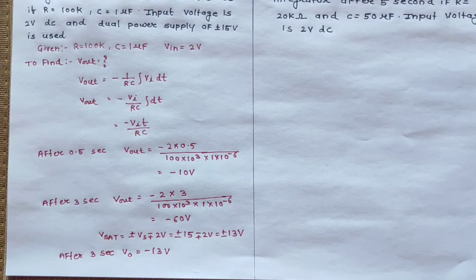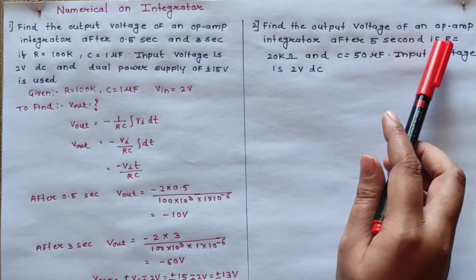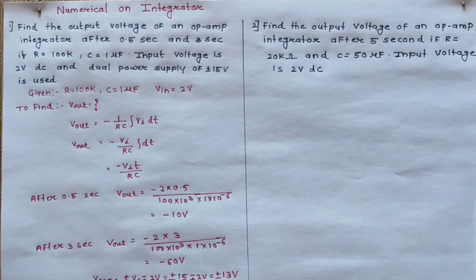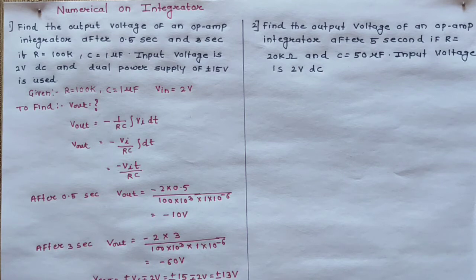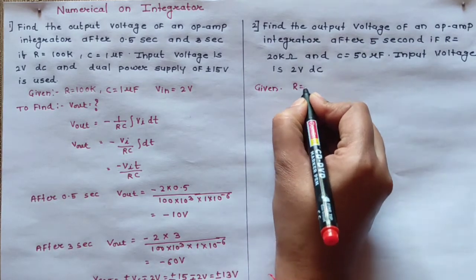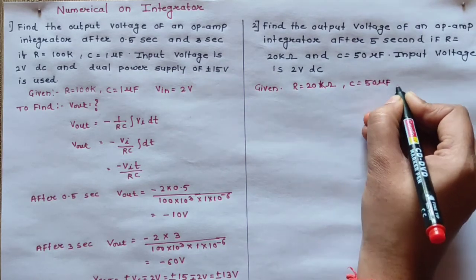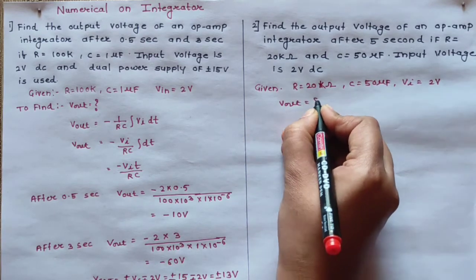That was a simple example. Let's come to the next example — numerical number 2. Find out the output voltage of an operational amplifier integrator after 5 second, if R is equal to 20 kilo ohms, C is equal to 50 microfarad, and the input voltage is 2 volts. In this case they are not providing the dual power supply, so you don't need to worry about the output range. So let's write down the given data: R is equal to 20 kilo ohms, C is equal to 50 microfarad, input voltage is 2 volt, and you have to find out the output voltage.